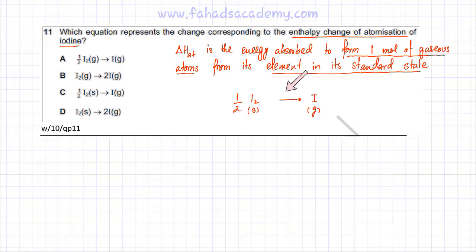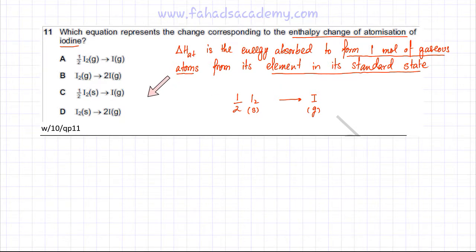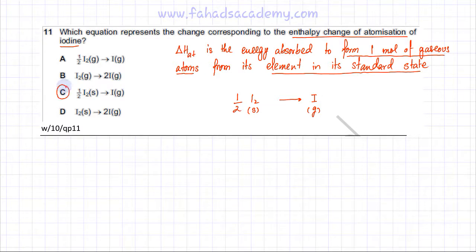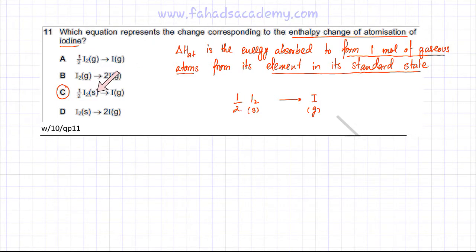So the enthalpy change for this reaction is the enthalpy change of atomization of iodine. The correct answer is option C: ½I₂(s) → I(g). One mole of gaseous iodine atoms is formed from the element in its standard state, which is I₂ solid at room temperature.